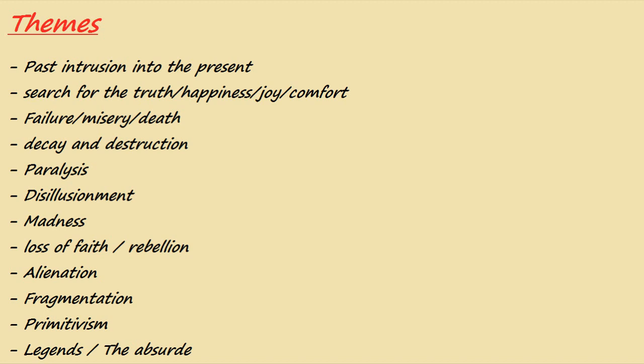Then we have the themes. First, there is past intrusion into the present — events that happened in the past usually come back in the story. Second, the characters of modernist works seek truth, happiness, joy, and even comfort, but they usually fail — they live in misery and the story usually ends with a death. The setting is mostly depicted as a decayed and destroyed one. You also have paralysis — after the war ends, nothing moves: no economy, no home, no family. Everything is static.